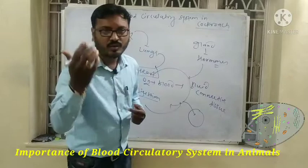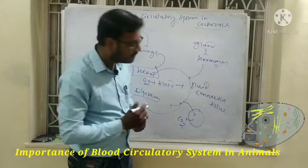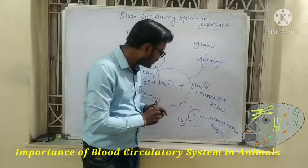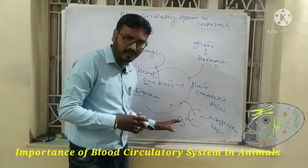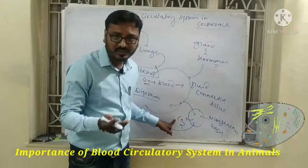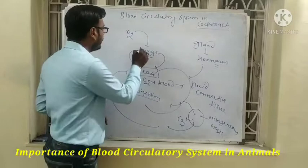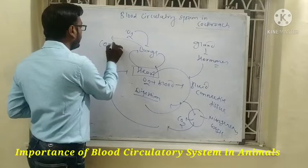These metabolic activities produce waste products like carbon dioxide and nitrogenous waste. Carbon dioxide and nitrogenous waste must not be stored in the body because they are hazardous. They mix with the blood, and veins carry this carbon dioxide-mixed blood back toward the heart, and from the heart it goes to the lungs, where during exhalation, carbon dioxide exits the body.